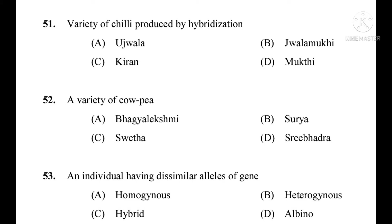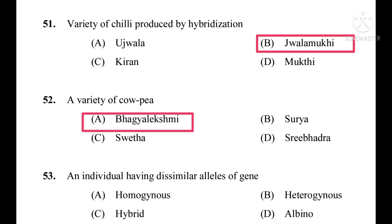Question number 51: Variety of chili produced by hybridization. The correct answer is Jala Mughi. Question number 52: A variety of cowpea. The correct answer is Bhagya Lakshmi.